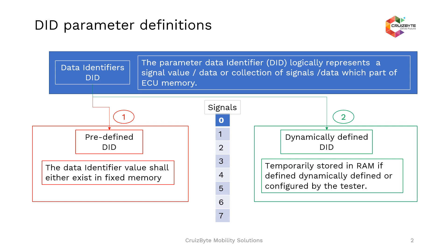Data identifiers can be classified into two types: predefined DIDs and dynamically defined data identifiers. Before getting into this classification, a DID itself can have one particular ID referencing one particular signal — a one or two byte data — or it can reference multiple signals or data items clubbed together like an array structure.